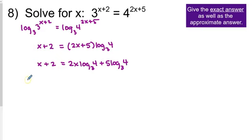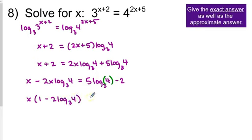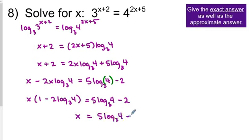Get all x terms on one side: x minus 2x log base 3 of 4 equals 5 log base 3 of 4 minus 2. Be careful — the 4 is inside the logarithm, and the minus 2 is not. Once you have your x terms on one side, factor x out: x times the quantity 1 minus 2 log base 3 of 4. Then divide, giving x equals 5 log base 3 of 4 minus 2, over 1 minus 2 log base 3 of 4. That's the exact answer.